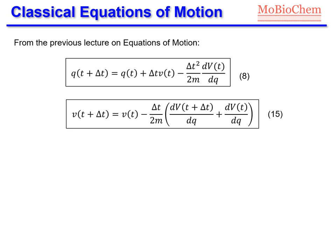In our last lecture we have seen the velocity Verlet algorithm, which is the solution of the classical equations of motion, where we can compute the coordinates at a particular time step t plus delta t from the coordinates of a previous time step, and also compute the velocities of the current time step from the velocities of the previous time step. We need to know the gradient of the potential energy in order to solve these two equations.